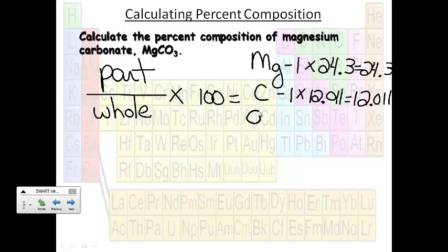And oxygen, and we have three oxygens, multiplied by the mass of the oxygens from the periodic table. So we get 48. Then we're going to add all these up. We get 84.311.